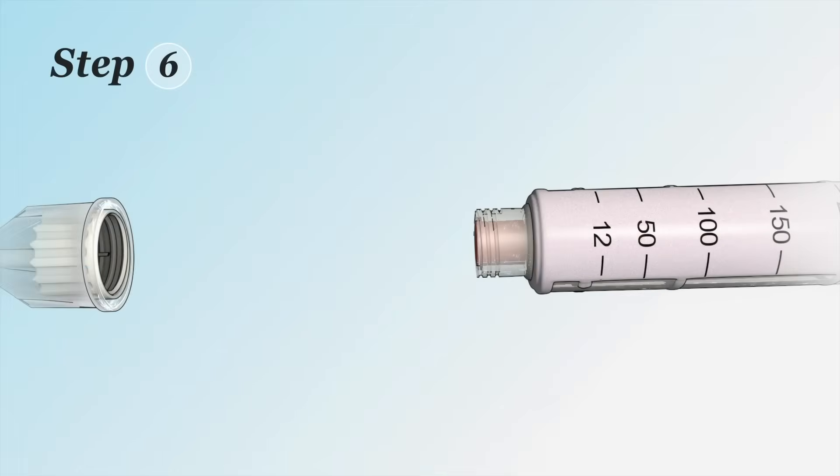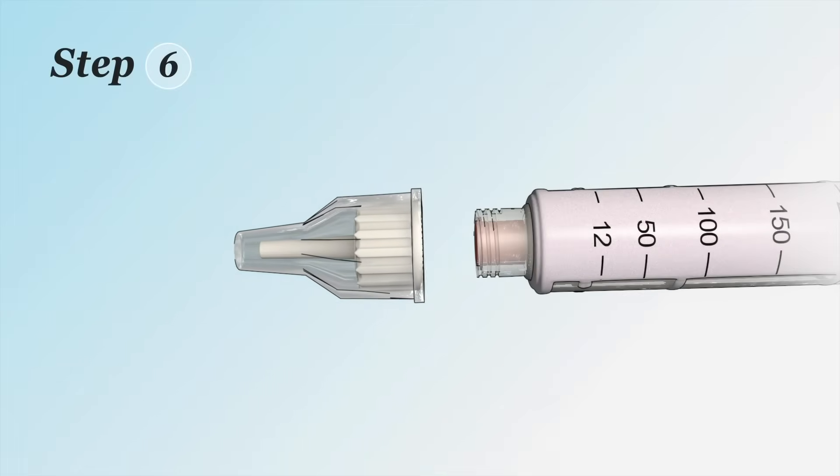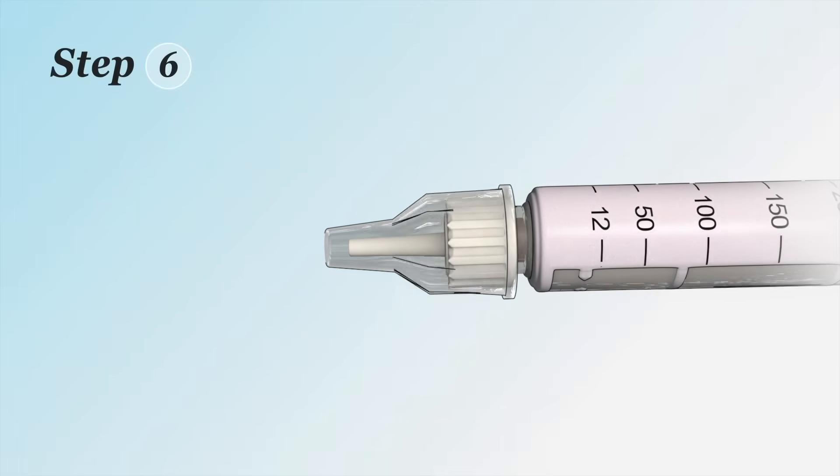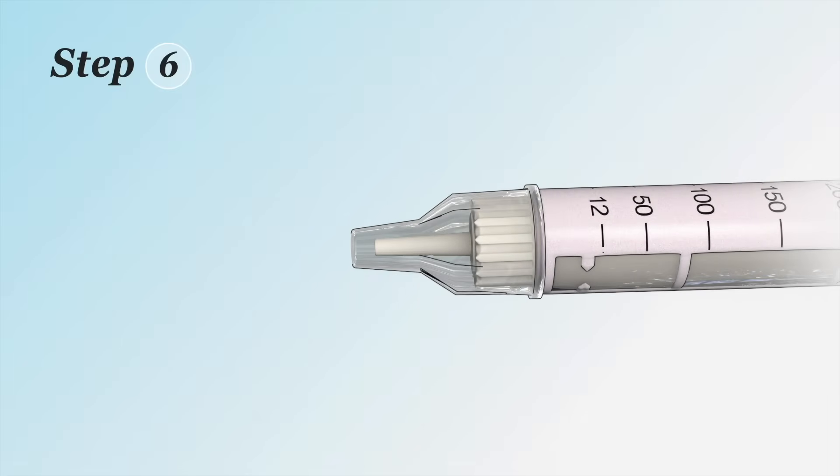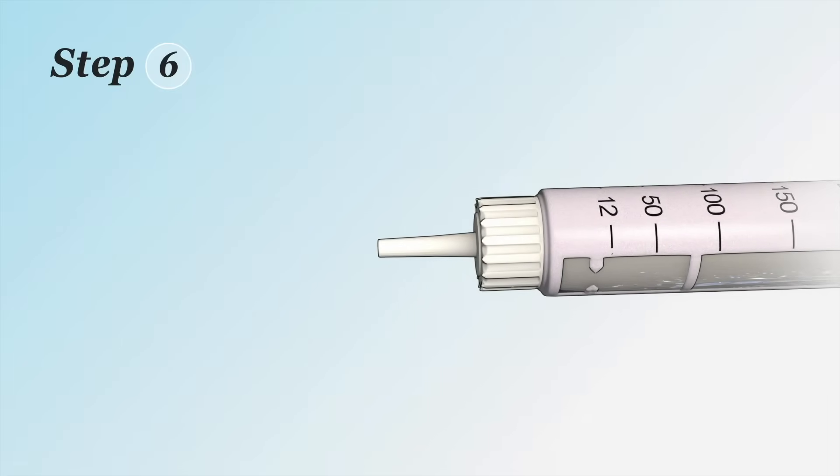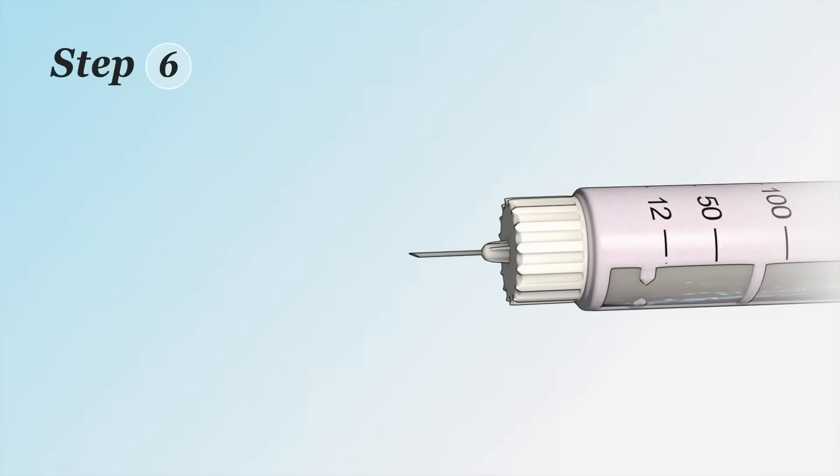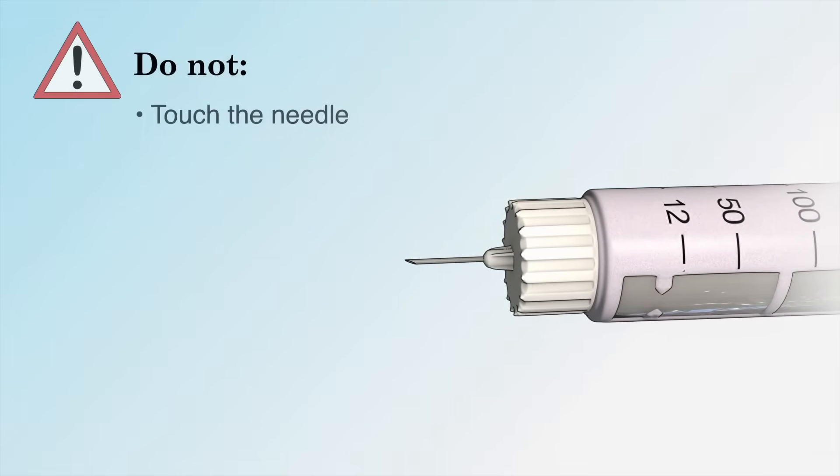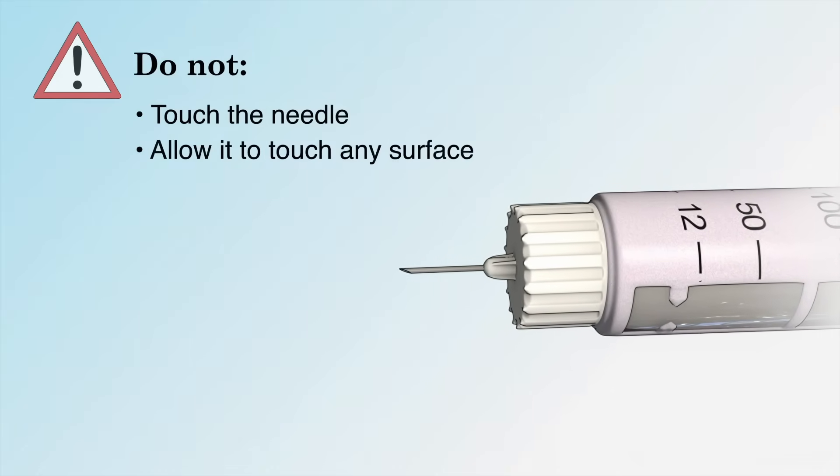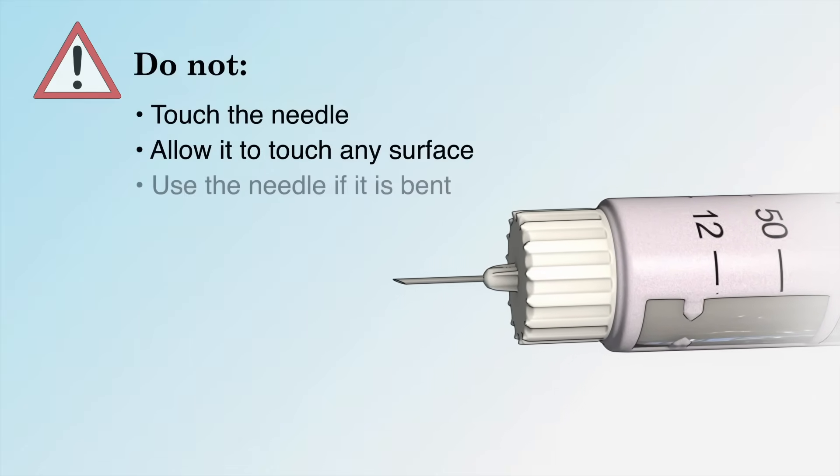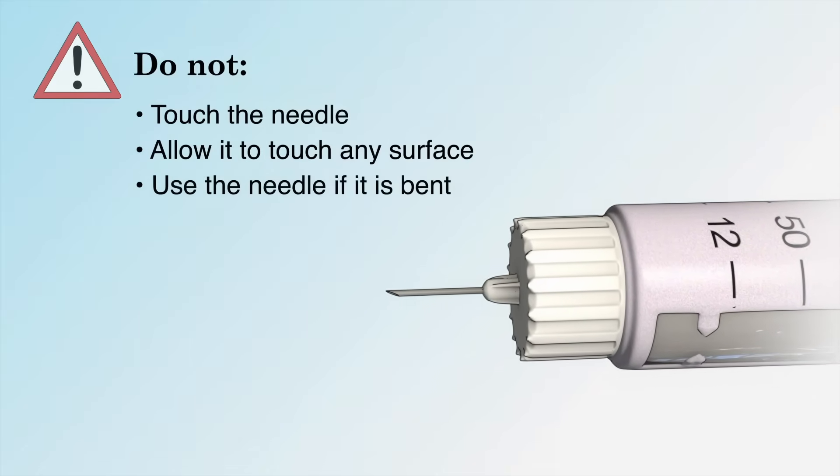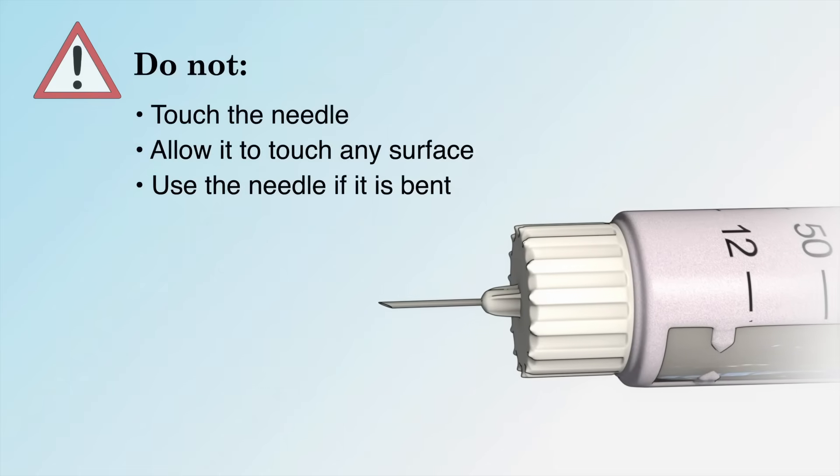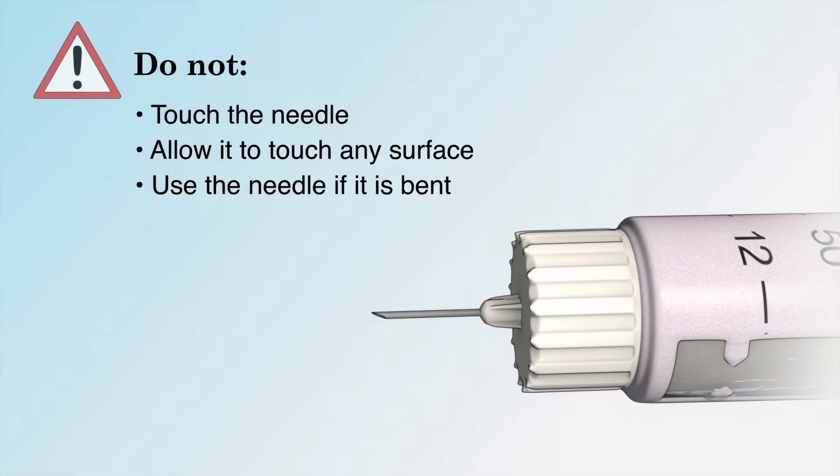Step 6: With the outer and inner needle caps still in place, attach the needle to your pen according to the instructions. Remove both the outer and inner needle caps. Do not touch the needle or allow it to touch any surface, and do not use the needle if it is bent. A bent needle can block or prevent the insulin from coming out.